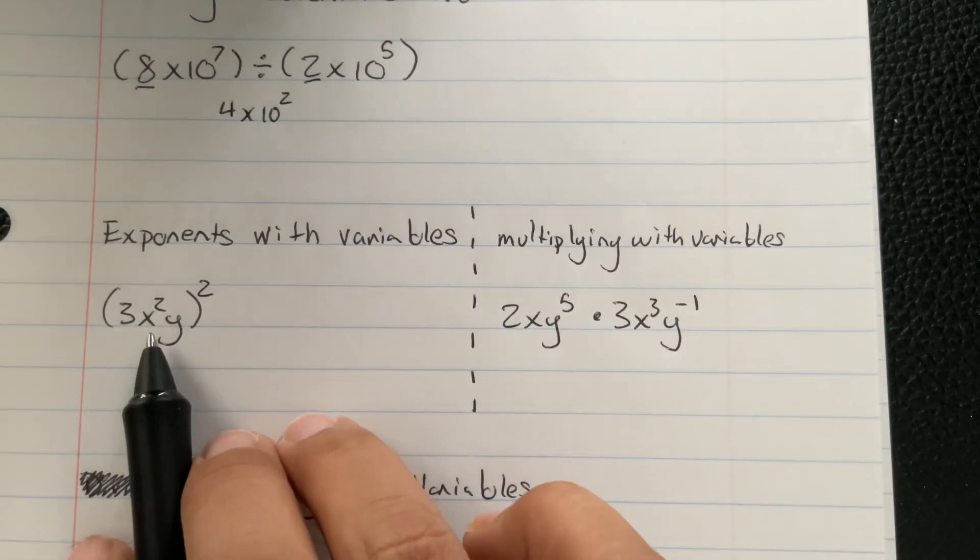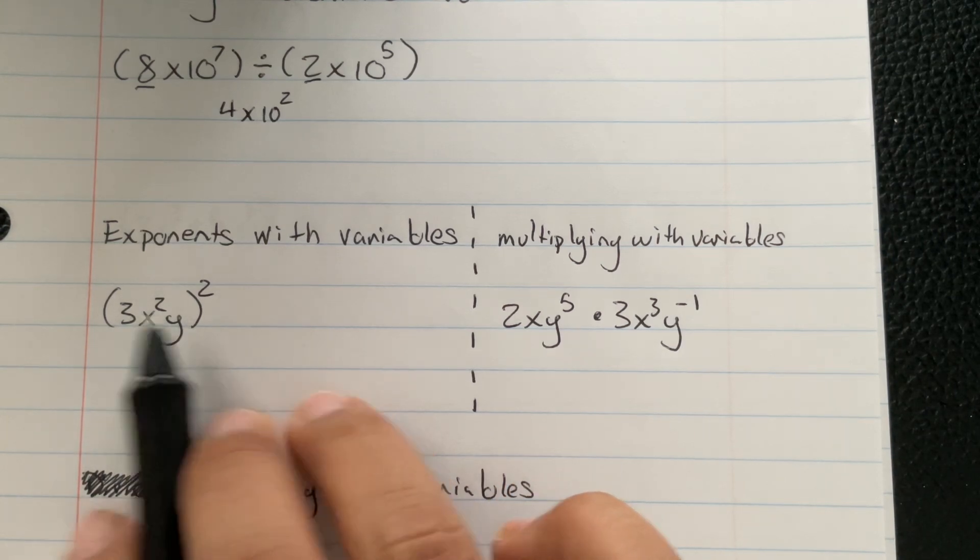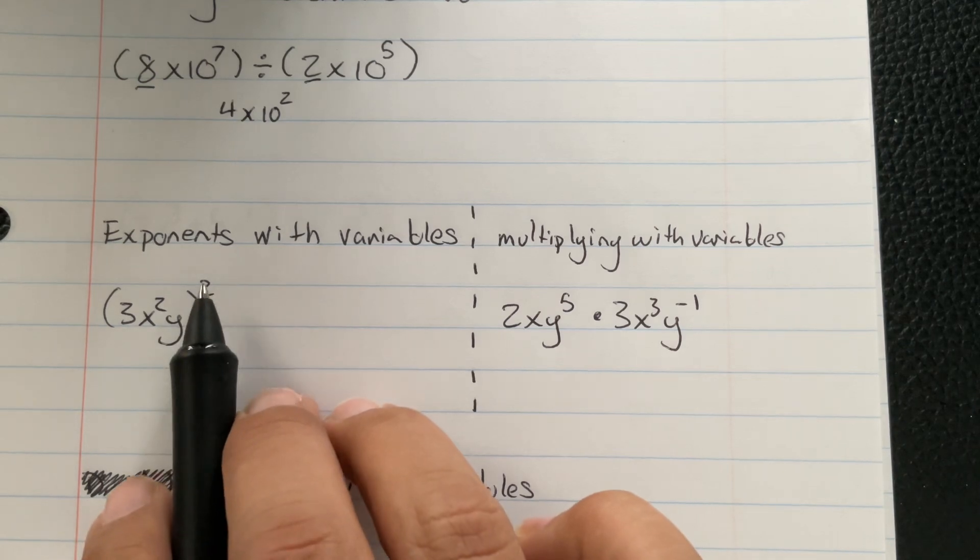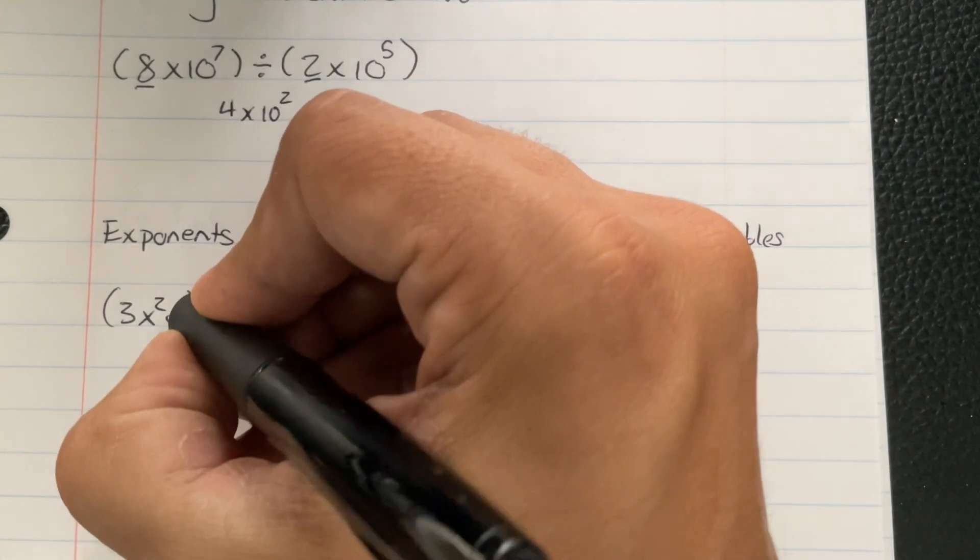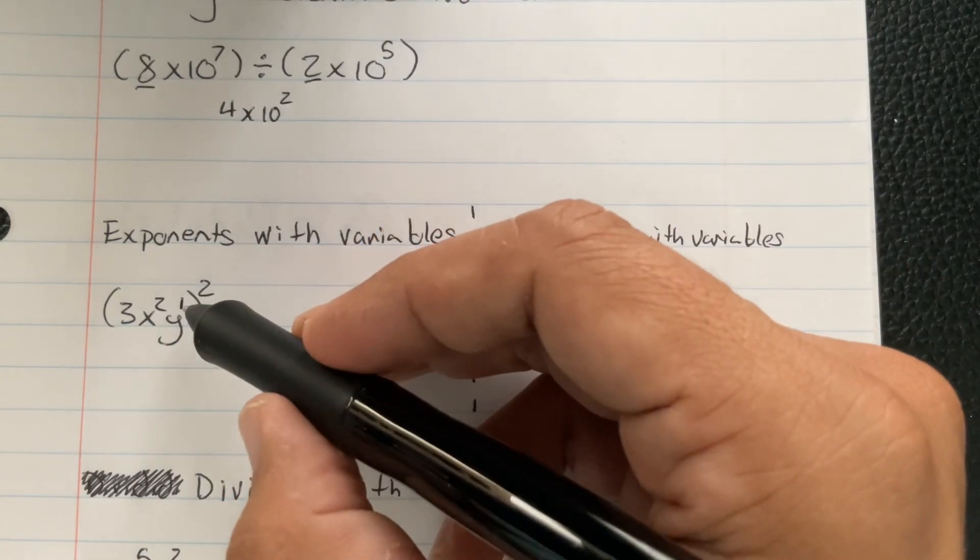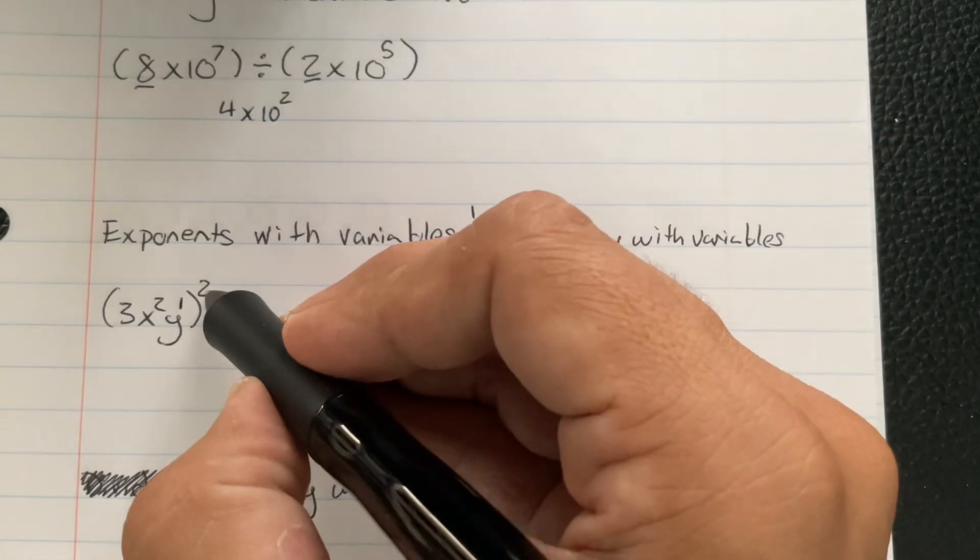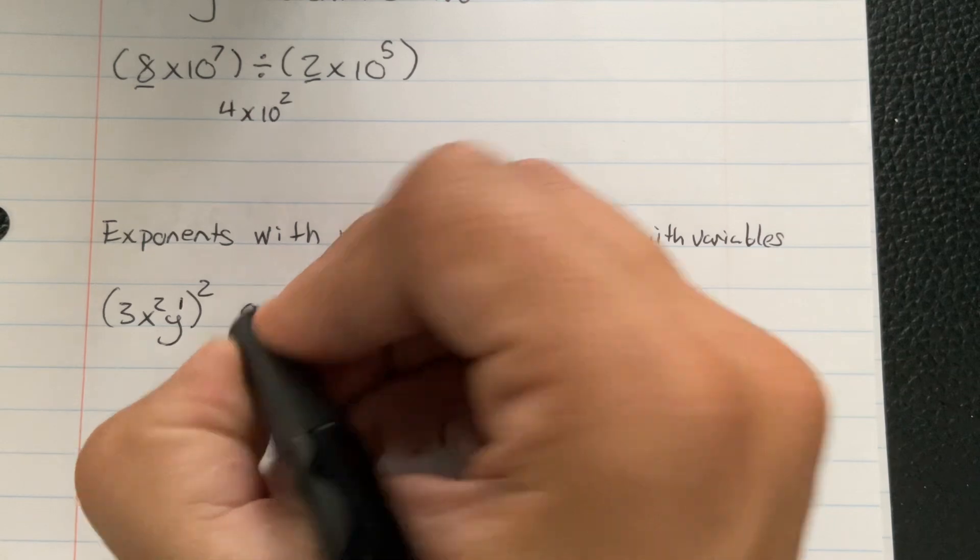So this is going to be every single element in here. There are three elements: the 3, the x², and the y are going to be squared. I'm going to put a 1 up here so I can remember that there's a 1 there. So 3² is 9. That's 3 times 3.